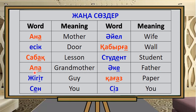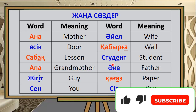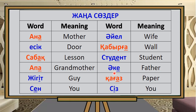Jigit means 'guy' or 'young.' Sin means 'you.' Ayel means 'wife.' Qabrga means 'wall.' The word for 'student' in Kazakh. Ake means 'father.'